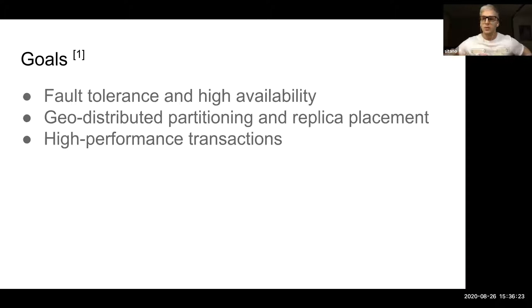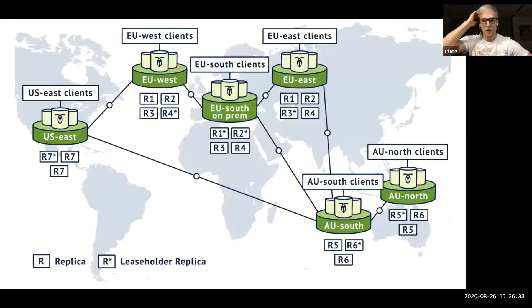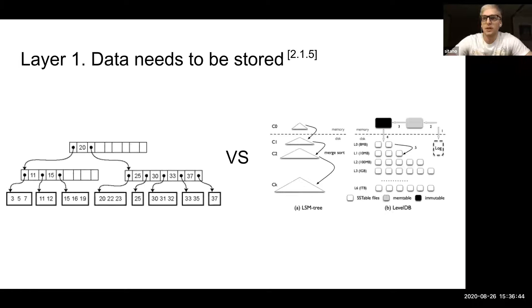Its preliminary goals are to provide high-performance transactions, geo-distributed partitioning, and fault tolerance. The scenario they are targeting is distributed clusters interconnected around the globe. CockroachDB is built as stacked layers on top of each other, starting with layer one, the local storage system.